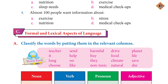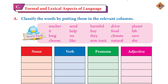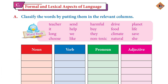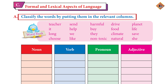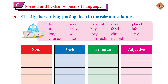Page number 95, section is formal in lexical aspects of language, Question A. Classify the words by putting them in the relevant columns. You will have 4 columns — grab a pencil and make 4 columns: Noun, Verb, Pronoun, and Adjective.